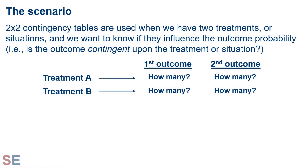Before we talk about calculating the relative risk and odds ratio, let's look at the scenario that these are used for. These are used when we have a 2x2 contingency table. 2x2 contingency tables can describe when we have two treatments or situations, and we want to know if they influence or are associated with the probabilities of two outcomes. The first two in the 2x2 is the two treatments, and the second two is the two outcomes we're interested in.